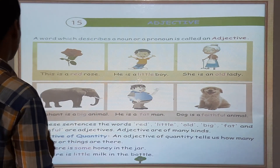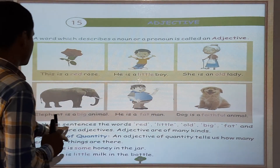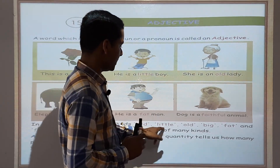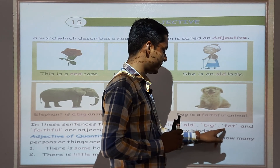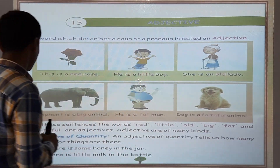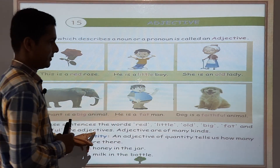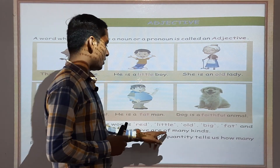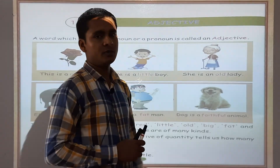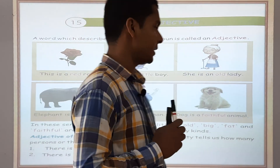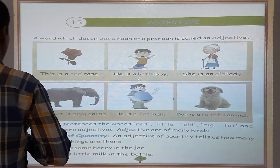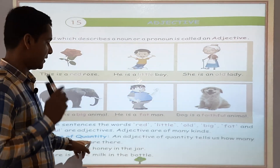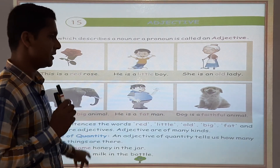Samajh gaye. Now, in these sentences, the words red, little, old, big, fat, and faithful are adjectives. Jaise maine aap logon ko bataya hai, Adjective are of different kinds. Adjective jo hai different type ke hote hain. Jaise first hai — Adjective of Quantity.